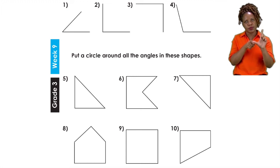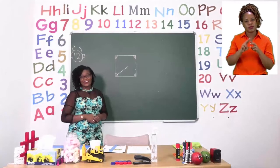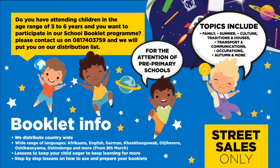And I will see you soon after our short advert break. Do you have children in the age range of five to six years and want to participate in our school booklet program? Please contact us on 08174 3759 and we will put you on our distribution list for the attention of pre-primary schools. Topics include family, summer, culture, traditions and houses, transport and communications, occupations, autumn and more. We distribute countrywide in over seven different languages.